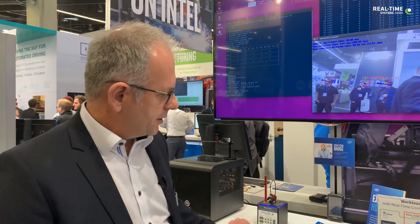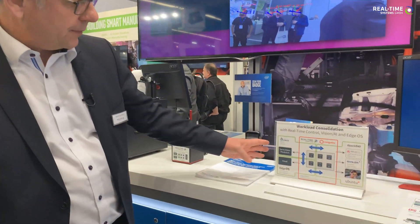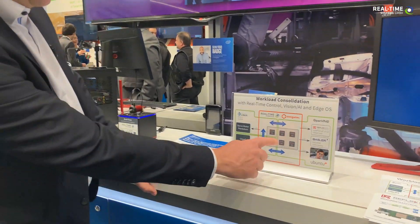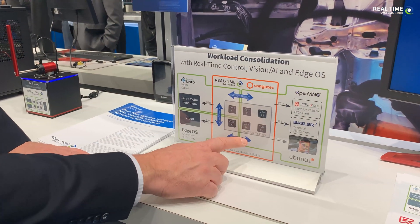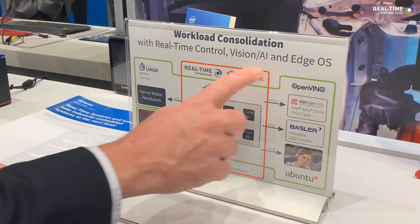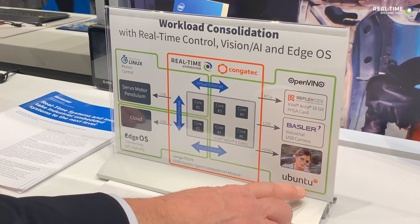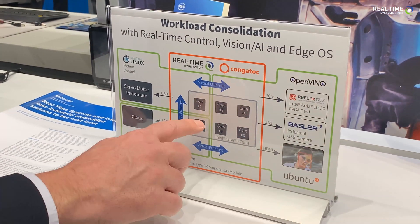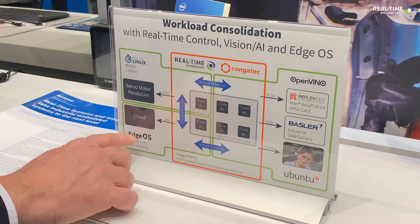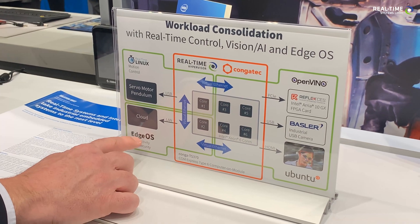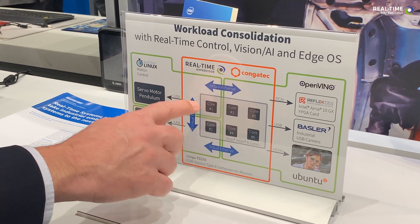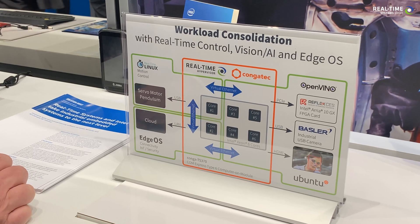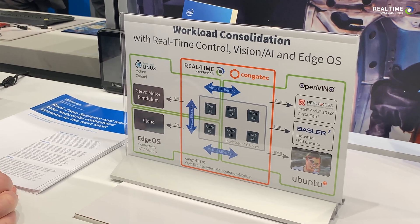In this example, we have a block diagram. We see four cores out of the six cores of the CPU running an Ubuntu operating system, one core running the Edge OS for the gateway, and one core carrying a real-time operating system with the pendulum.